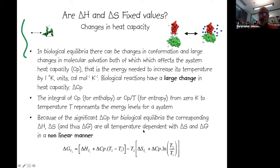Because the integral of heat capacity gives us enthalpy, and entropy is Cp/T integrated over temperature, both ΔH and ΔS become temperature dependent when there is a significant ΔCp. Consequently ΔG becomes temperature dependent, with entropy and free energy varying in a non-linear manner because of the logarithmic term in the entropy expression.